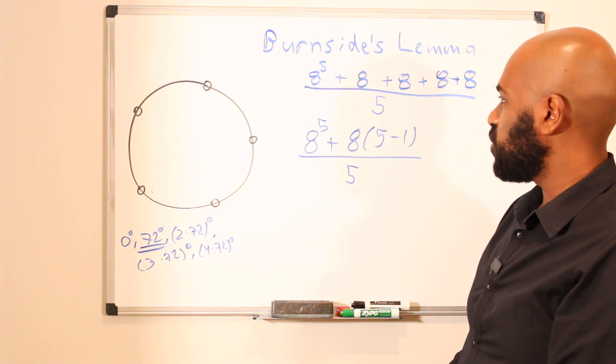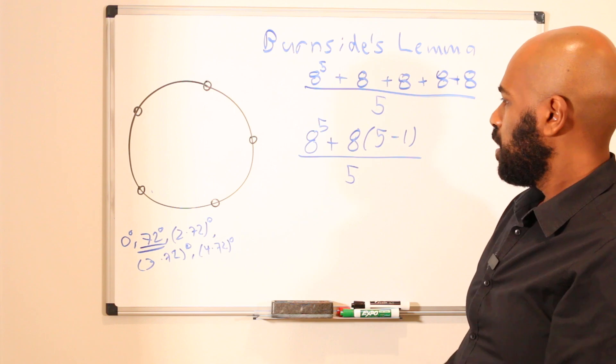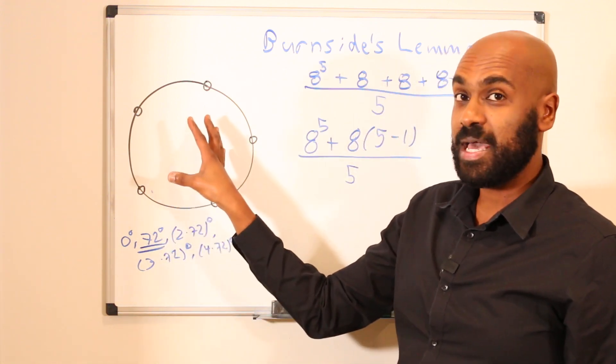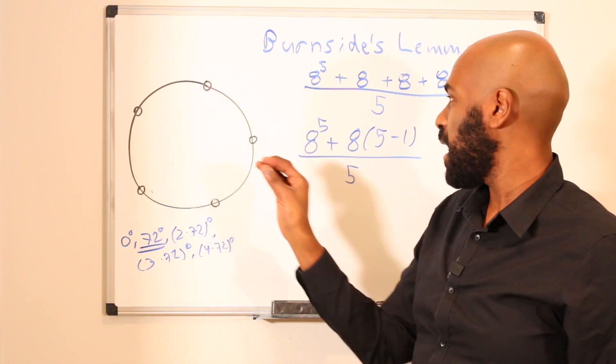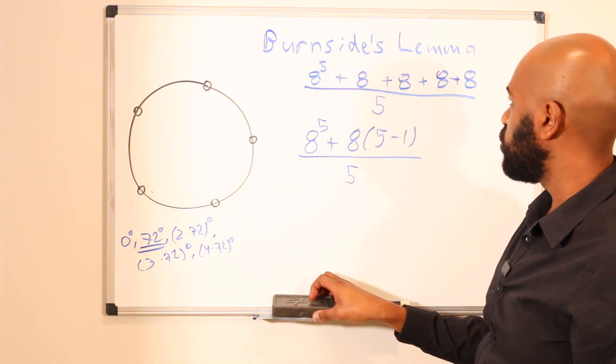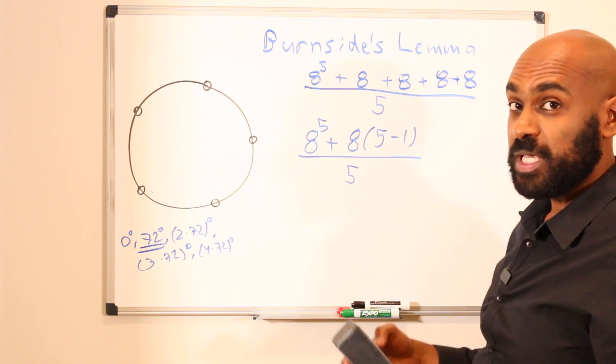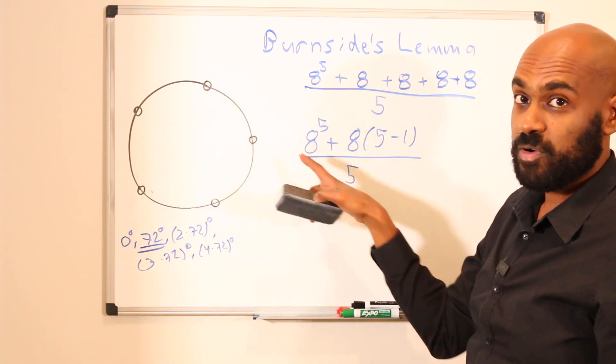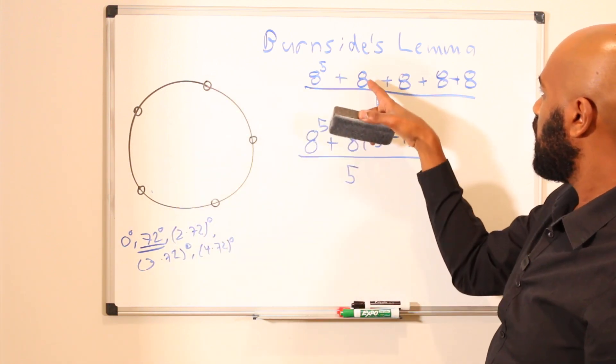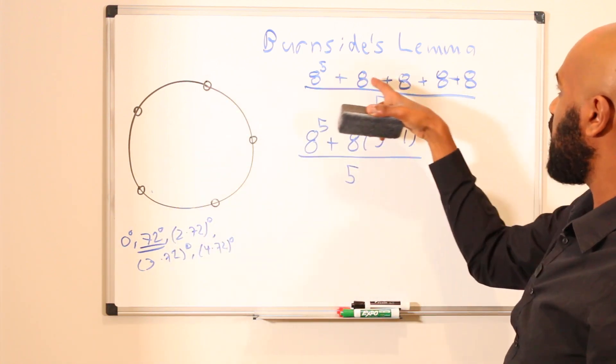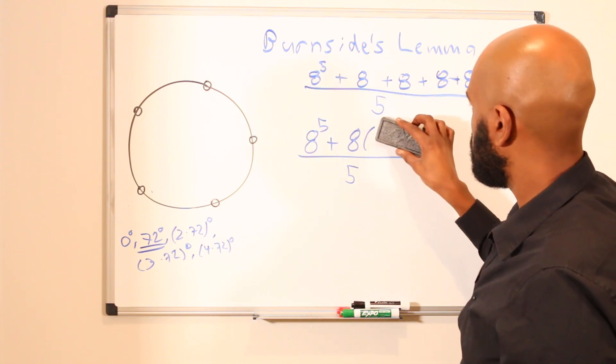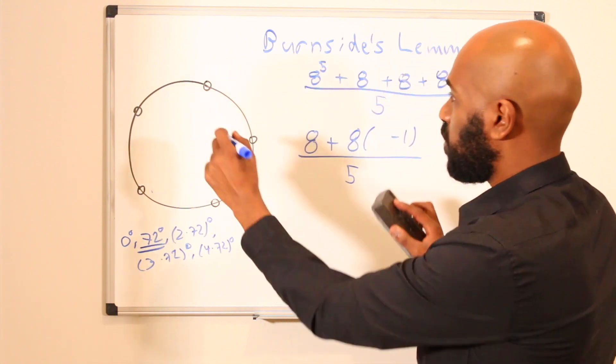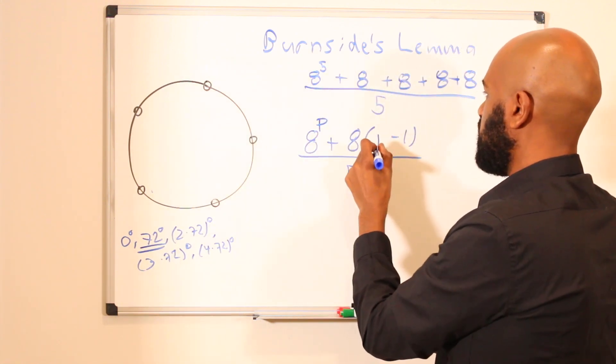So I want to make some observations. First of all, the fact that we got these 8s here had to do with the fact that we had 5 beads and 5 is prime. So the result that we'd have in general, if 5 was replaced with a prime number, would be we'd have that prime number in the exponent here for the number of beads that we're coloring, and we'd have p minus 1 copies of this number 8 right here. So in general, if we replaced the number of beads from 5 to a prime p, we'd have this formula for the number of colorings by Burnside's Lemma.